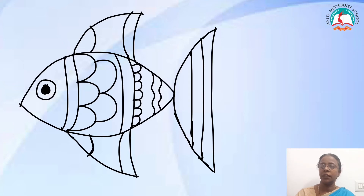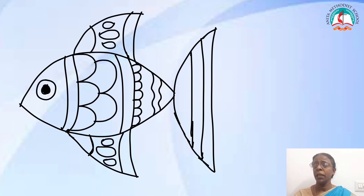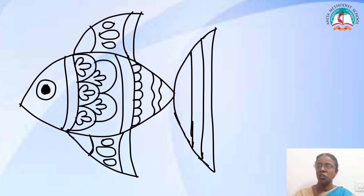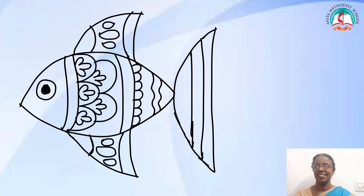Followed by that, draw two wavy lines like this. Then draw three continuous small curves on the fins. Draw small and big ovals like this. Now inside those big curves on the body, draw three continuous small curves like this, which will add more detailed design and make this different from other art.